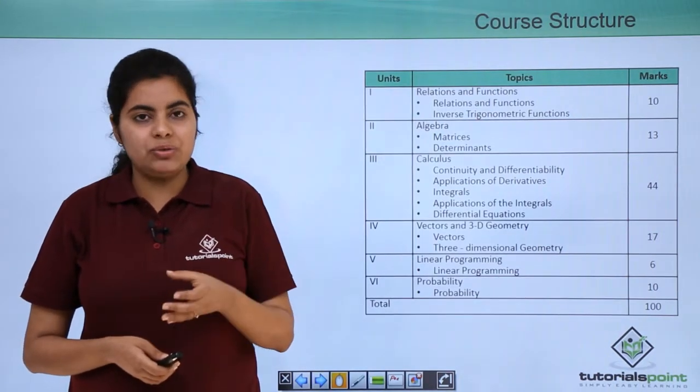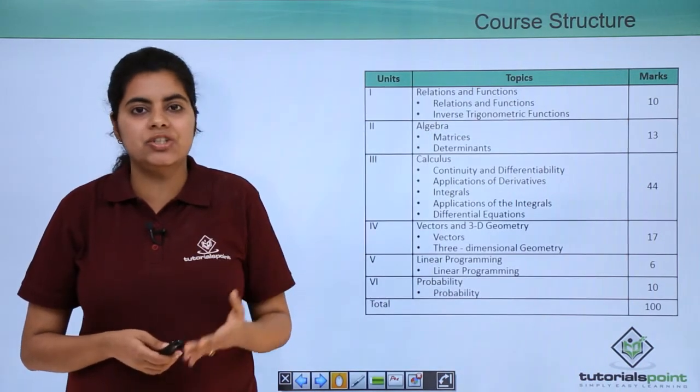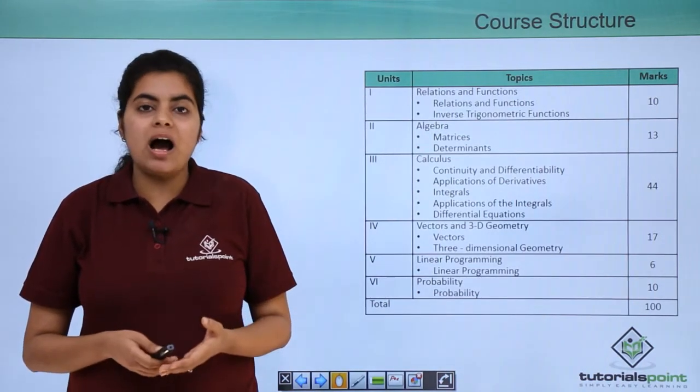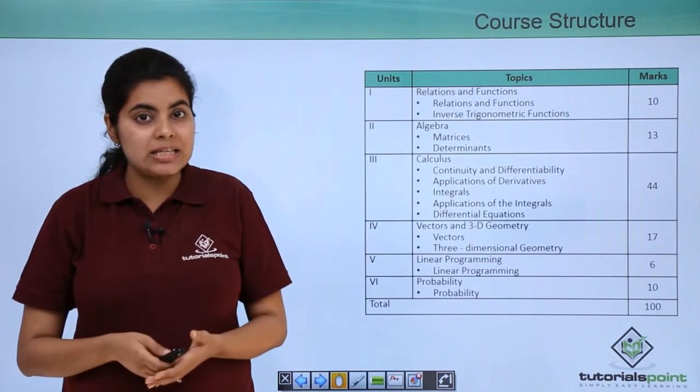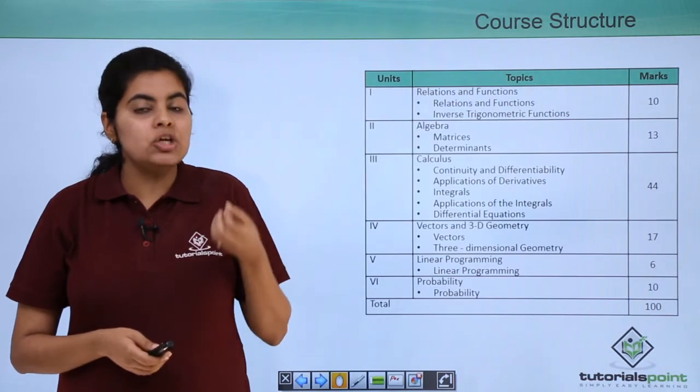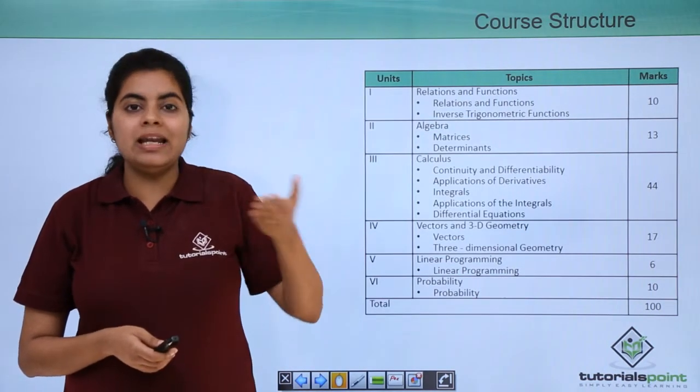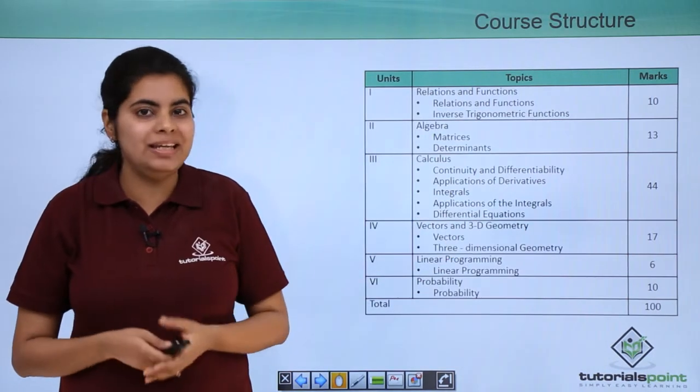Now vectors and 3D is based on how you can imagine and analyze certain things. There are many formulas in this chapter and if you know the formulas and you have the ability and capability to analyze, to imagine and then understand things, you can get these 17 marks very easily.